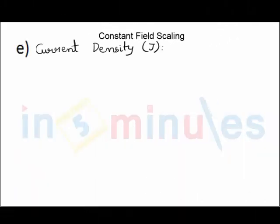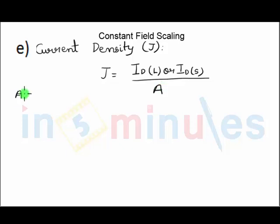Let's move on. The next thing what we need to understand is current density. Now current density is given by current, either in the linear region or in the saturation region, divided by area in which the current is flowing. We know that area is given by W into L, width of the channel into the length of the channel.